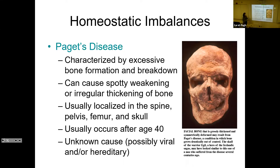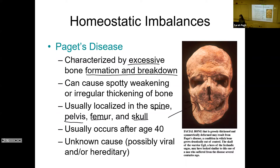The last imbalance is Paget's disease. We don't actually know what causes it, but it involves excessive bone formation and breakdown, causing some areas of your skeleton to get really thick and other areas to get really weak and thin. It's usually found most often in the spine, pelvis, femur, and skull. It typically doesn't occur until after about age 40, and they don't really know what causes it — they think it could be genetic, possibly turned on when exposed to a particular virus.